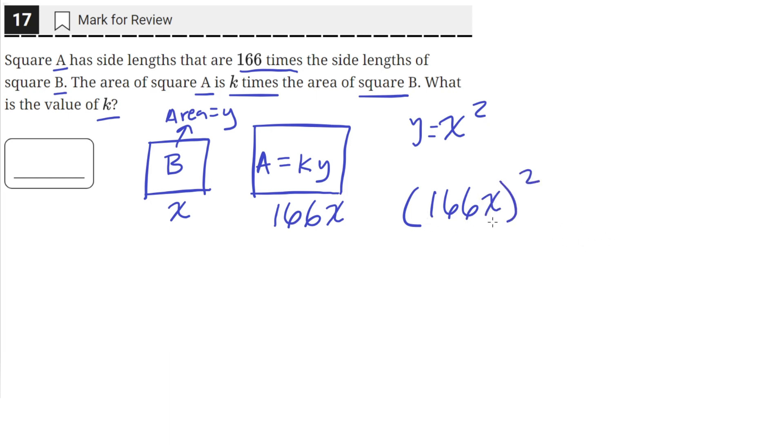Now if we simplify this, we'll get that 166 squared times x squared is the area of square A. And the area of B is just x squared.